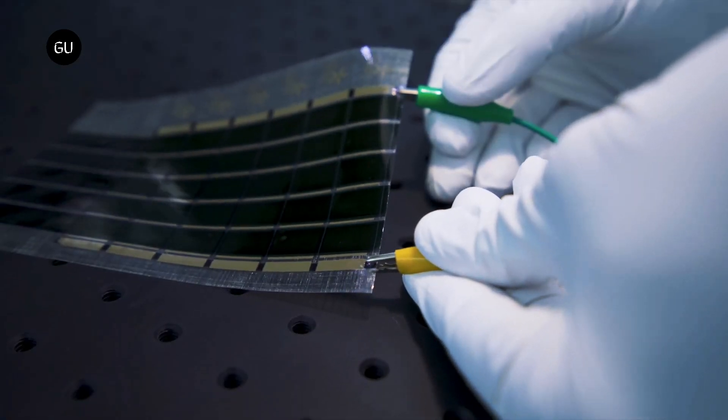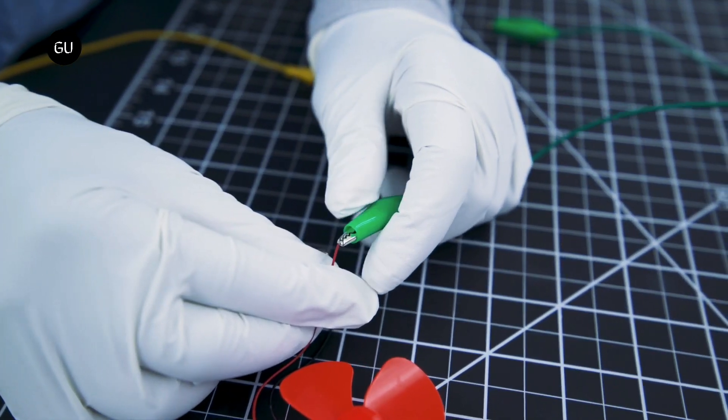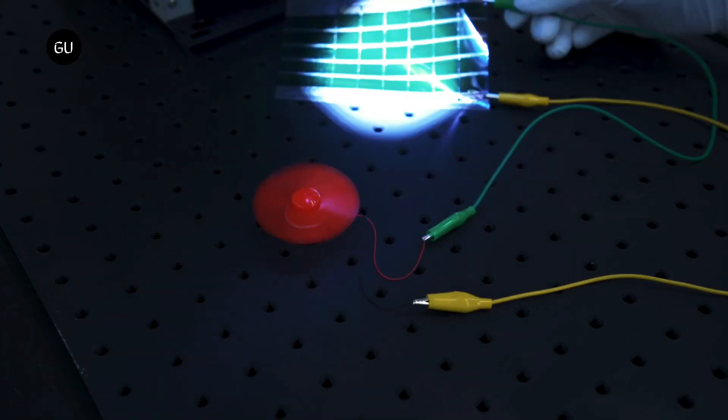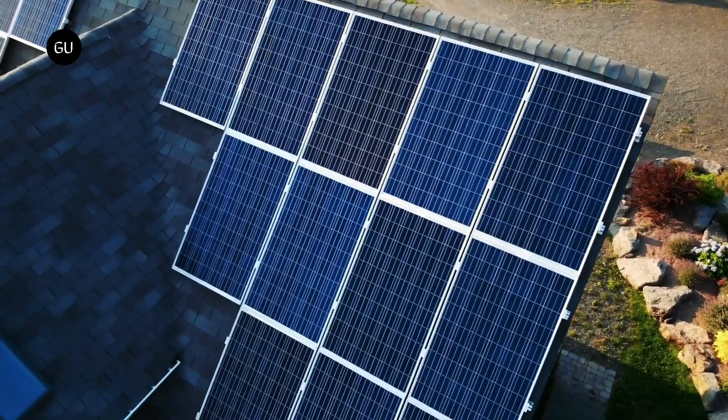Engineers have developed ultralight fabric solar cells that can quickly and easily turn any surface into a power source. These durable, flexible solar cells, which are much thinner than a human hair, are glued to a strong lightweight fabric, making them easy to install on a fixed surface.